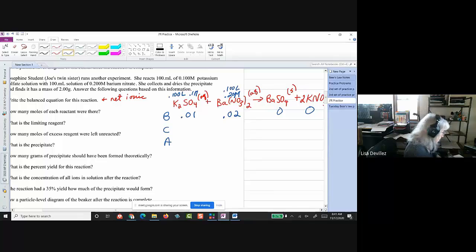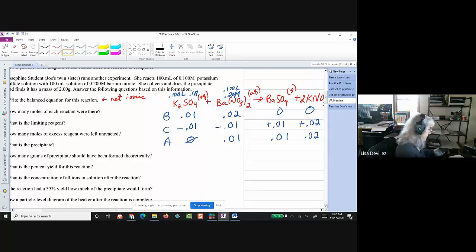All right, and they're one-to-one. So my limiting is the potassium sulfate, and this is going to be plus 0.01 and plus 0.02. So 0.01, 0.01, 0.02.